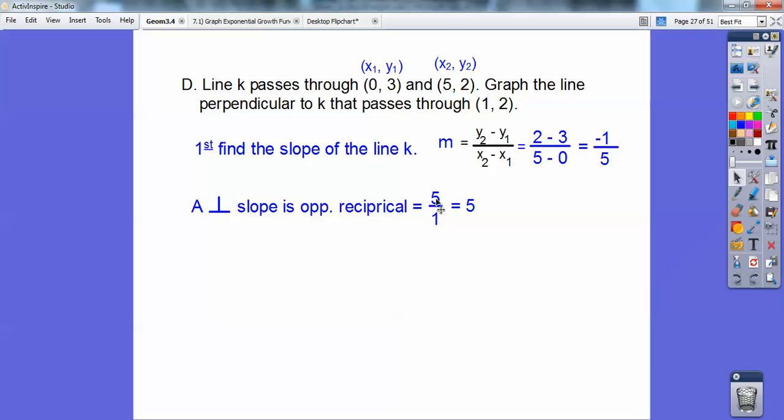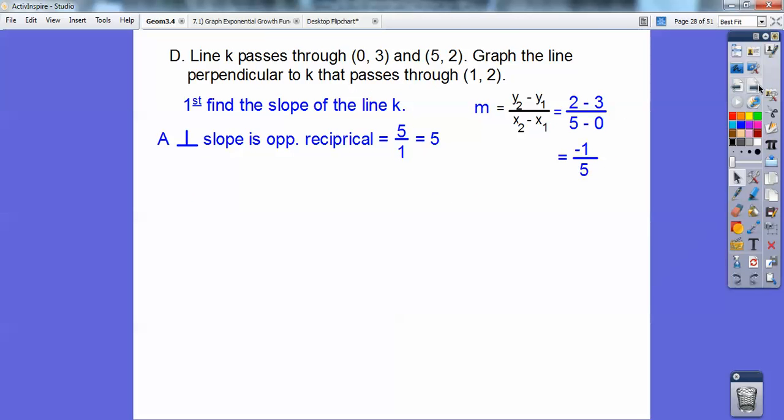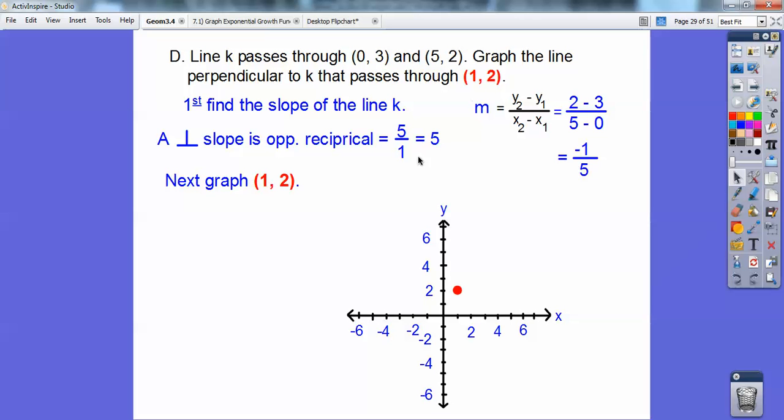So then a perpendicular slope is to flip it and change the sign. So since that one's negative, a perpendicular slope is going to be positive. I'm going to need that slope right now. But let's first graph this point. It's going through (1, 2), so let's just graph (1, 2), over 1, up 2. Now we're going to use the slope.